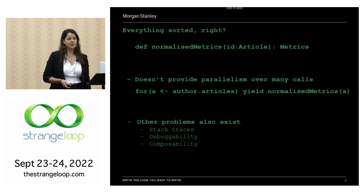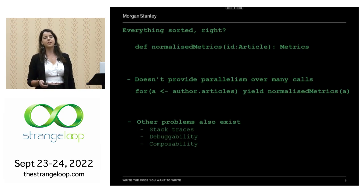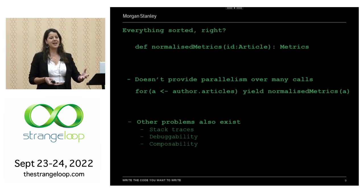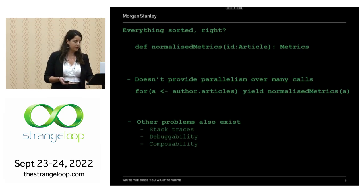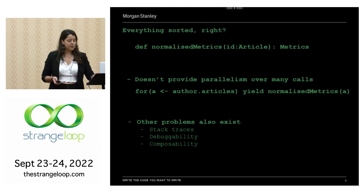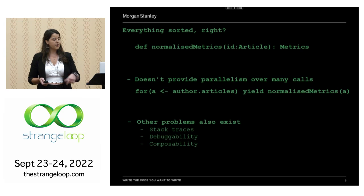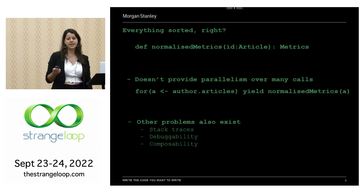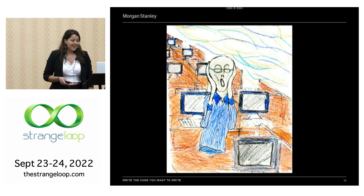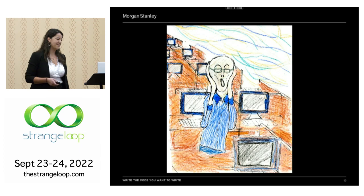Other problems exist too. Stack traces no longer look like the code we wrote — JVM stacks don't map to the code we actually wrote. There are all sorts of invasive types now, so compiler errors become essays of types to deduce what's going on. Debuggability becomes harder — where do you even put the breakpoint when you don't know when anything is actually running? And composability: if my function now returns a future of metrics rather than just metrics, then anything that calls it has to deal with that — it's not dealing with the underlying metrics type that represents our business logic.